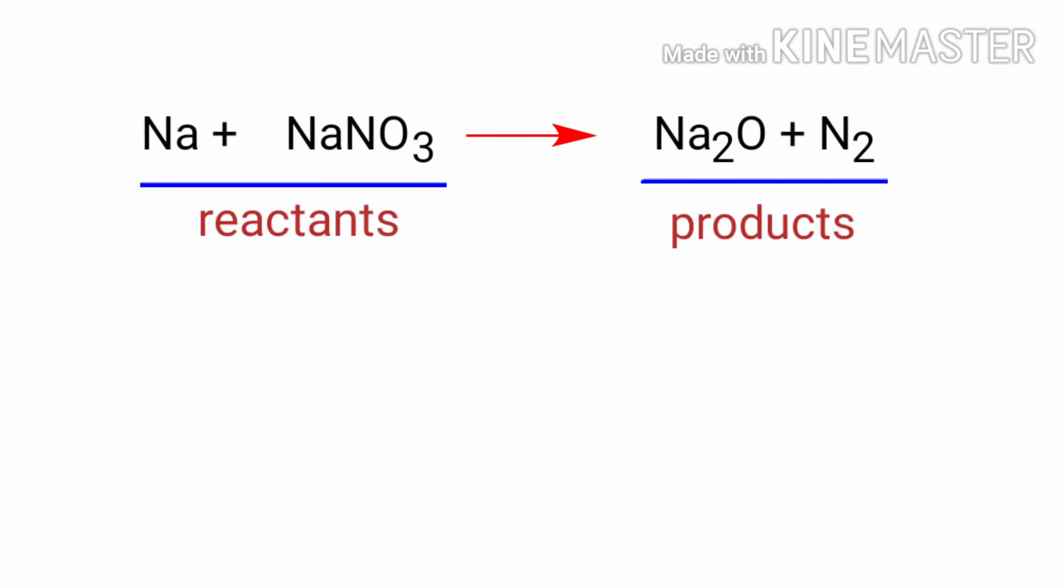In this equation, the reactants are sodium and sodium nitrate, and the products are sodium oxide and nitrogen. If you look at this equation, the equation is not balanced.